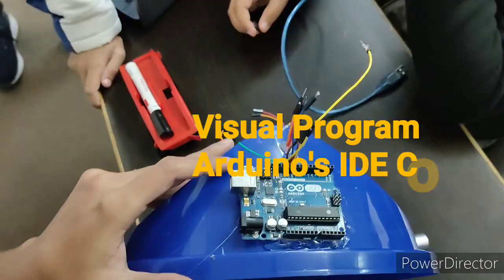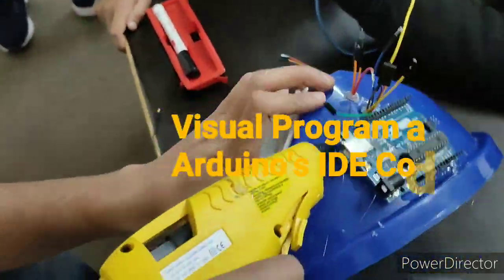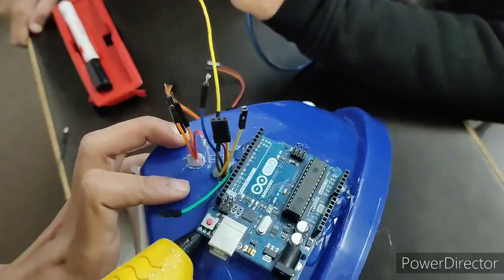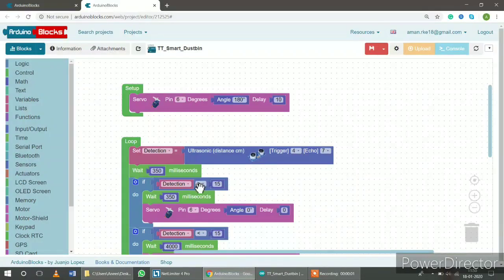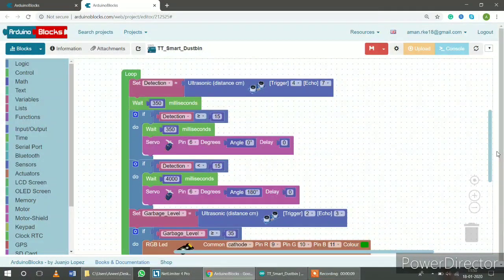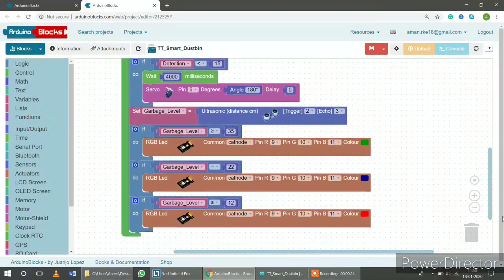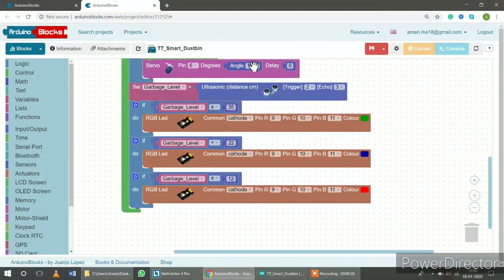Now moving to the programming part, we are using Arduino block visual program for our dustbin project. As you are seeing in the video, initially the motor angle is 180 degrees, and it may be different for you because it depends on how you have fixed your motor in the dustbin. The detection ultrasonic sensor's range is 15 centimeters. Whenever an object will be there within this range, it will actuate the motor and the motor angle will change to zero degree.